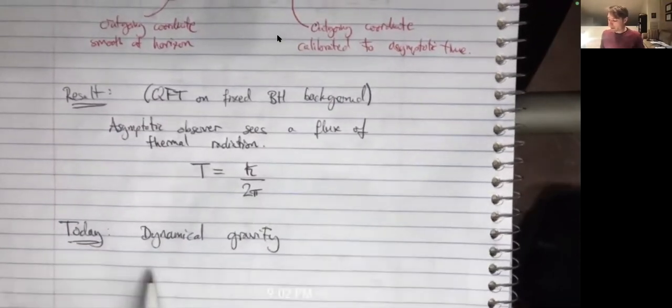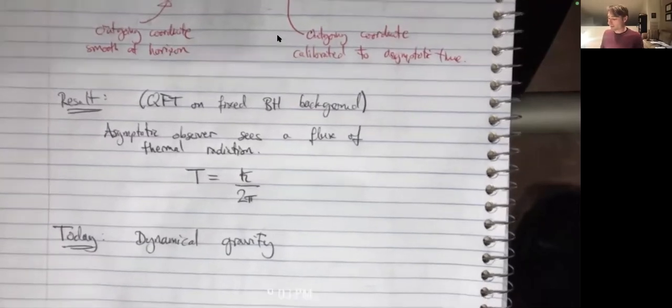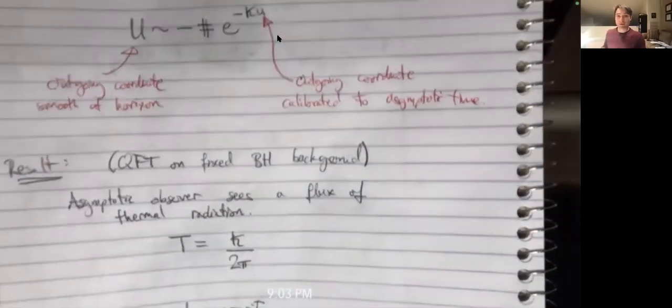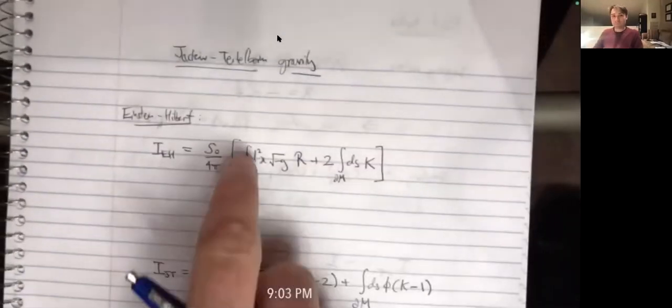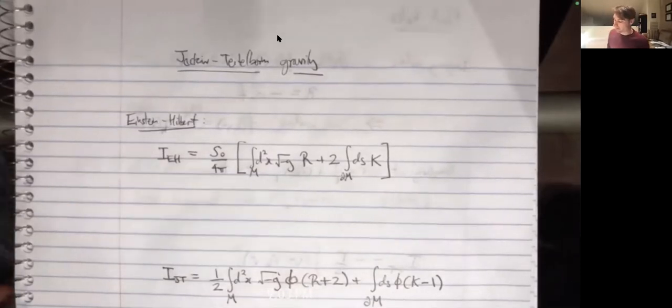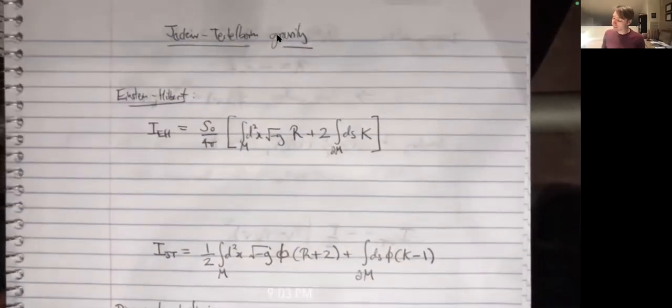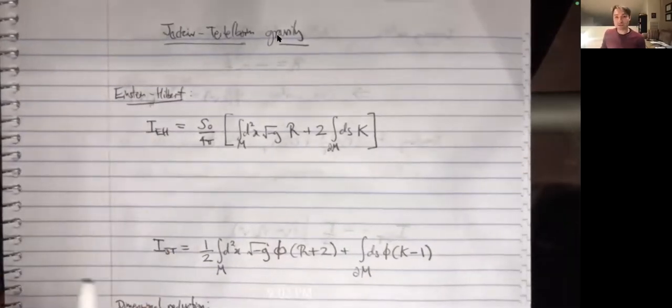That was the main point of yesterday, all using a fixed background. Today we introduce some dynamics and have a dynamical metric. The model used throughout these lectures is the simplest possible two-dimensional model of gravity, just to illustrate the ideas in a concrete and simple setting.